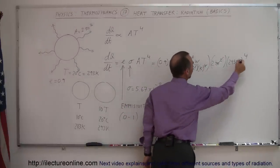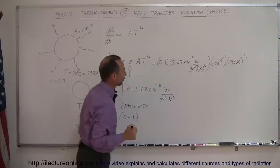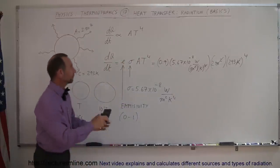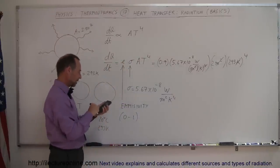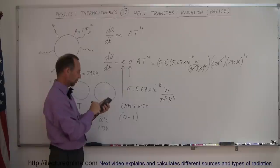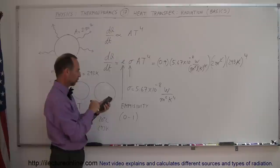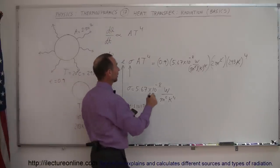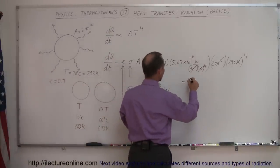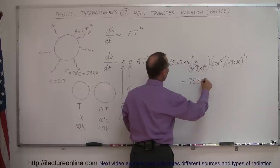Now you can see, of course, Kelvin to the fourth will get rid of Kelvin to the fourth over there, which leaves us with watts. And if we then calculate this, we have 0.9 times 5.67 e to the minus 8, times 2, and times 293 square and square again, equals, and this is then equal to 752 watts.